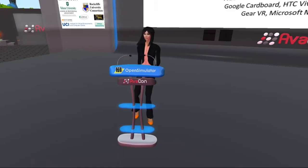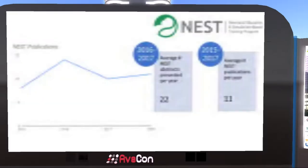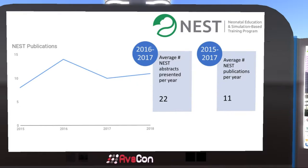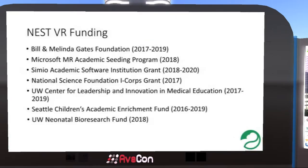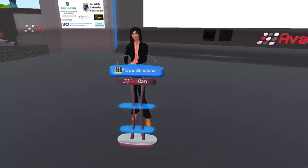Anyone who has tried getting someone to give you money will tell you that grant writing is tough. But at the University of Washington, our NEST lab has been fairly successful in getting grant funding from various sources of funders, as well as doing a lot of publishing and presenting, mostly around simulation and virtual reality. These are the current sources of our funding: we have a large grant from the Gates Foundation, we're part of the Microsoft Mixed Reality Academic Seating Program, we have a Simio Academic Software Institution grant for discrete event simulation, some National Science Foundation funding for exploratory work around a virtual patient simulator, and some local funding through our Institutional Center for Leadership and Innovation in Medical Education, as well as our hospital's academic enrichment fund and our division's bioresearch fund.